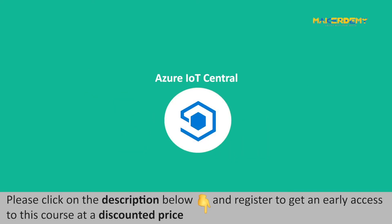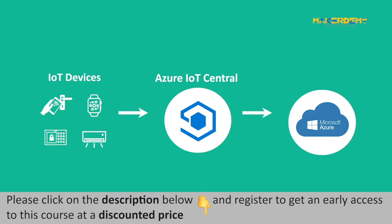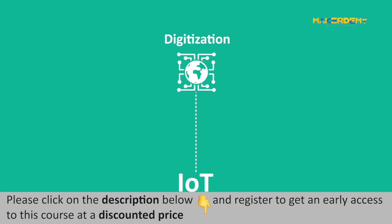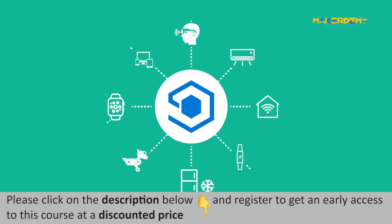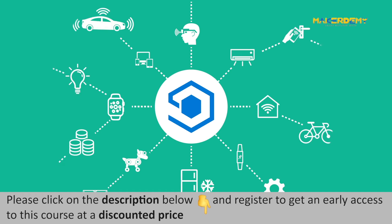Second is Azure IoT Central. Azure IoT Central is an IoT application platform that connects IoT devices to the cloud, reconfigures IoT devices, updates devices, and manages devices in a single location. IoT devices are growing rapidly, and IoT is the present and future of digitization. Azure IoT Central allows us to rapidly scale from a few connected IoT devices to millions, faster than just about any other cloud IoT platform.